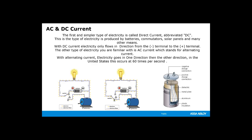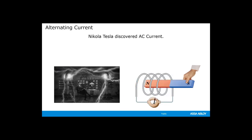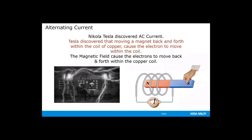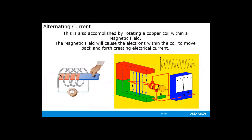Each current type has its own advantages and disadvantages. This is a name you should know: Nikola Tesla is given credit for discovering AC current. Tesla discovered that moving a magnet back and forth within a coil of wire causes the electrons to move within the coil — as the magnet moves back and forth, it causes the electrons within the coil to move back and forth. This can also be accomplished by rotating a copper coil within a magnetic field. The magnetic field will cause the electrons within the coil to move back and forth, once again creating an electrical current.